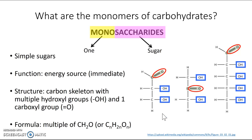Looking at this first molecule, we've got three carbons, so there should be six hydrogens — and indeed there are — and three oxygens, and indeed there are. The second molecule is also C₃H₆O₃. So what does that make these two molecules? They have the same formula but different structures, so they are isomers.